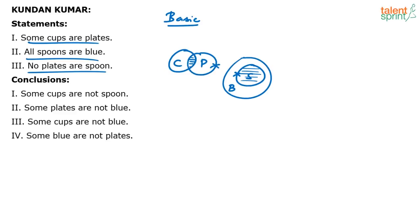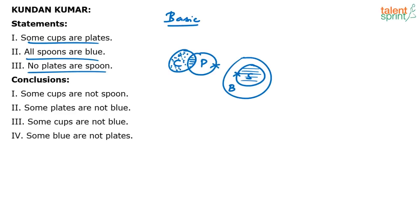Let's go and verify the conclusions one by one. First: some cups are not spoon. If I check the basic diagram, some cups are not spoon is true — in fact, all the cups are not spoons. I can choose some portion of these cups and say these cups are not spoon. So the basic diagram confirms you can always find some cups which are not spoons.